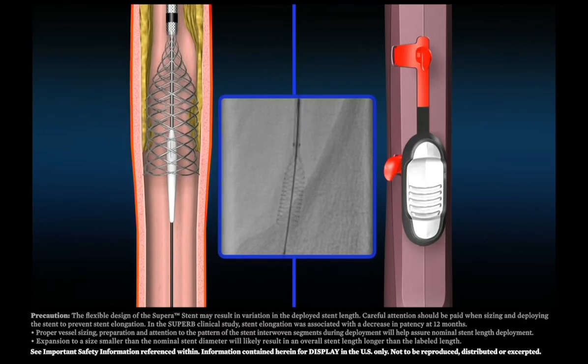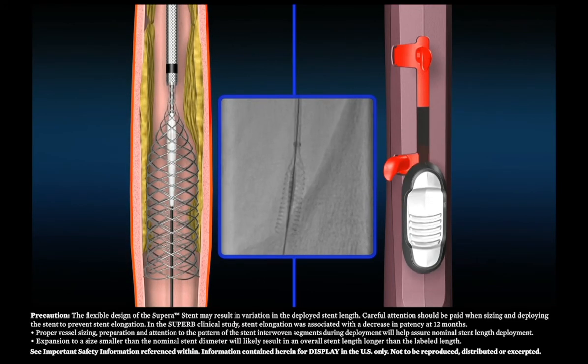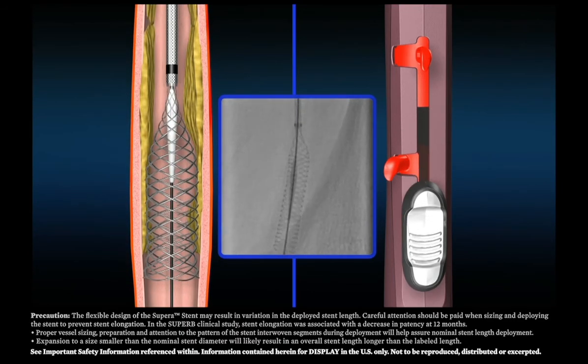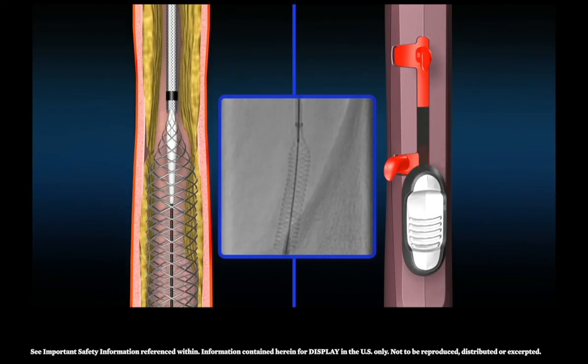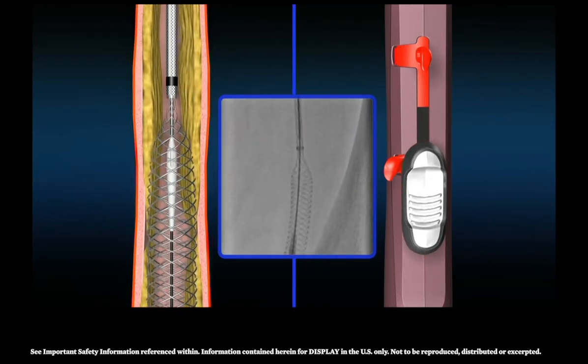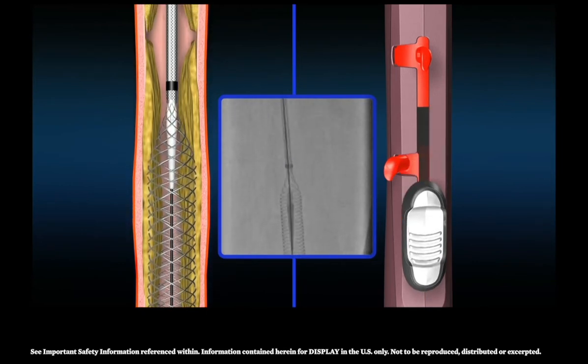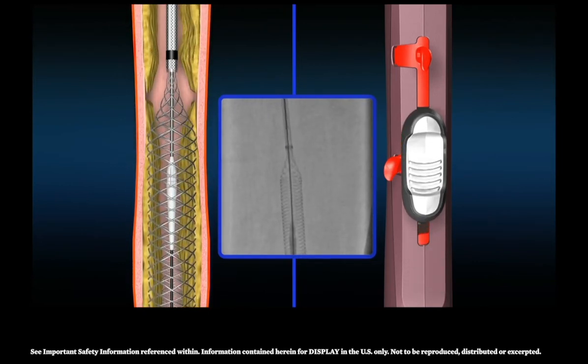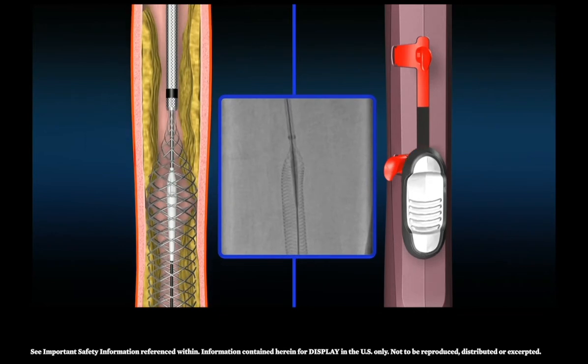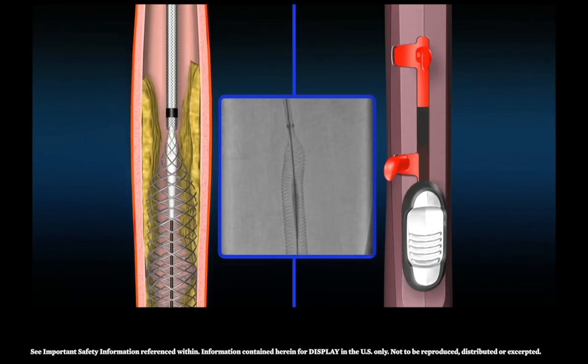Continue controlled advancement of the thumb slide under fluoroscopy. Each full advancement of the thumb slide will only deploy a short section of the stent. Shorter thumb slide advancements may provide greater control versus full thumb slide advancements. Fluoroscopic visualization and tactile feel will indicate the end of stent deployment.